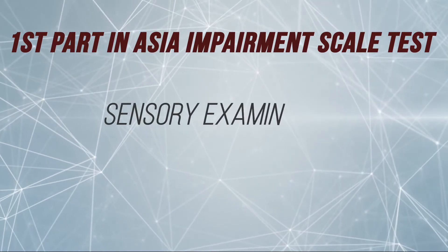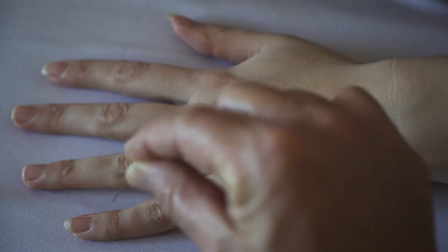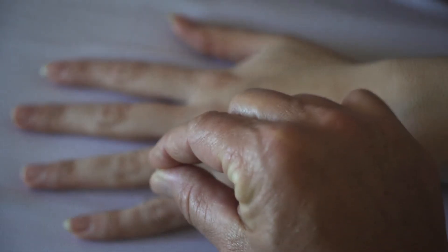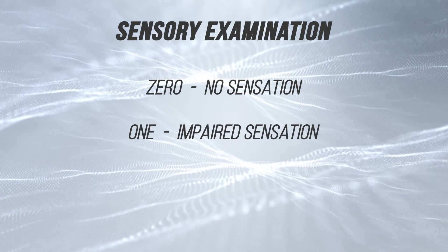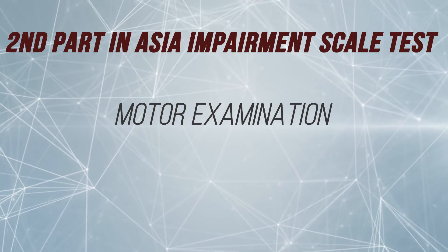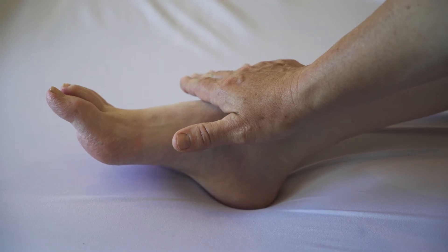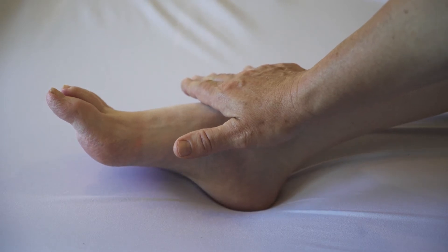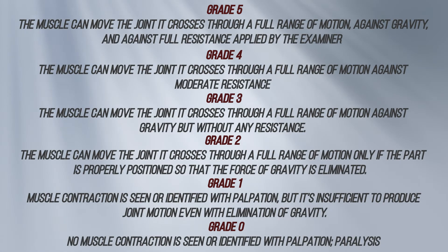First is the sensory examination, which is tested with light touch such as a cotton ball and a pin prick. The scoring system uses a 3-point scale: 0 is no sensation, 1 is impaired sensation, and 2 is normal sensation. Next is the motor examination, where different sections of muscles are checked for strength and resistance, graded from 0 to 5 according to the MRC grading scale.